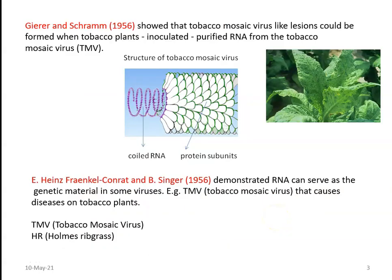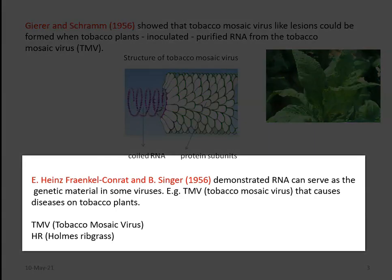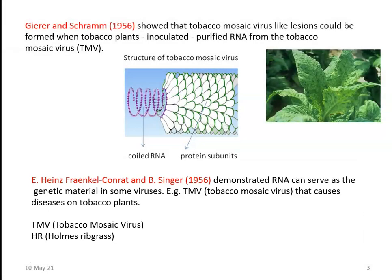Now we will look at the experiments and scientists associated with RNA as a genetic material — what experiments were conducted to prove RNA as a genetic material. The important scientists are Gierer and Schrammann, who showed that tobacco mosaic virus-like lesions could be formed when tobacco plants are inoculated with purified RNA obtained from tobacco mosaic virus. Another experiment providing proof for RNA as a genetic material was conducted by Heinz Fraenkel-Conrat and B. Singer. They used two different kinds of viruses to prove that RNA can serve as a genetic material.